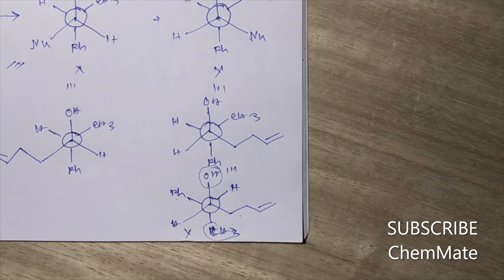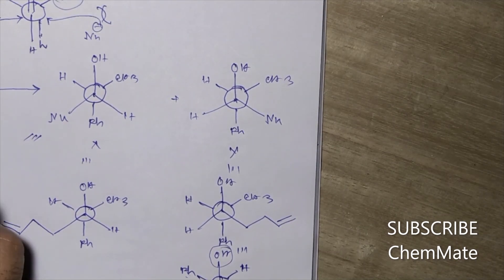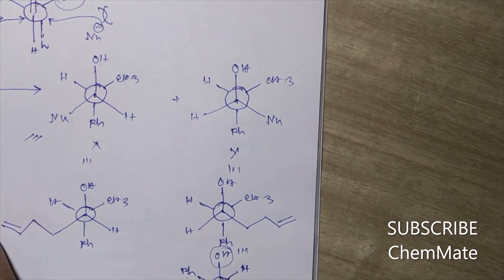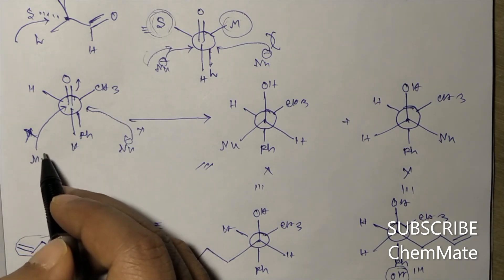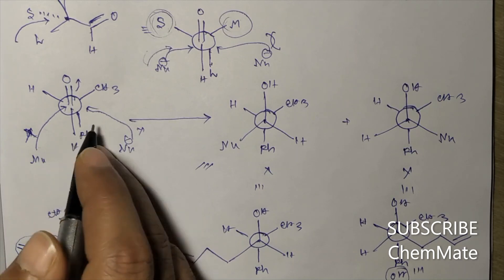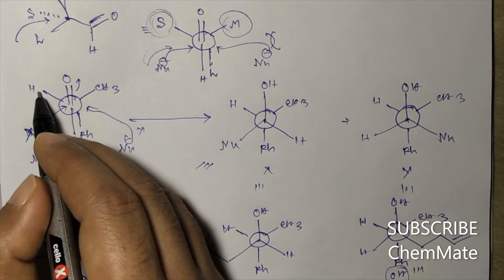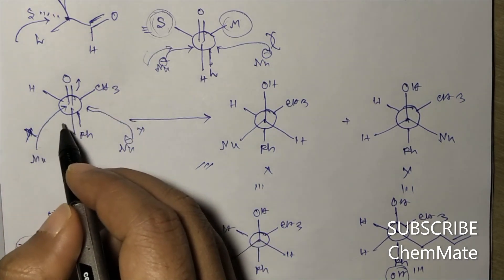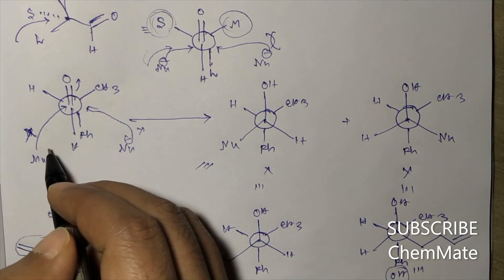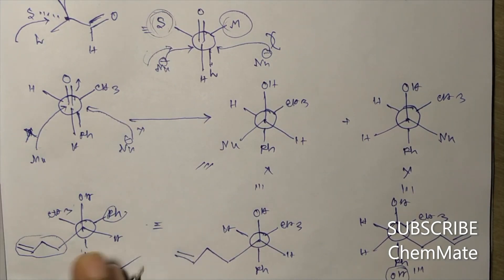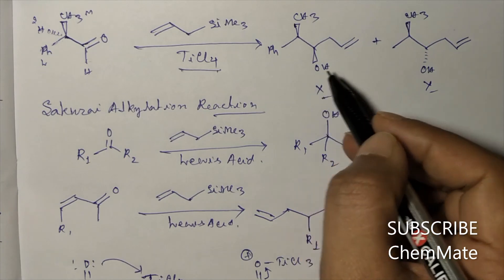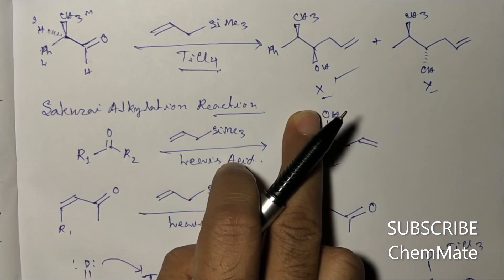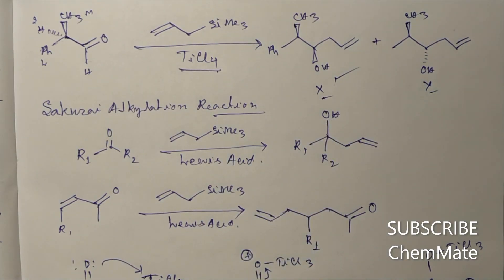The nucleophile may attack from both sides of the carbonyl carbon, but attack from the hydrogen side is preferentially the major attack because hydrogen is smaller than CH₃, so steric crowding is less. Therefore, product X will be the major product and will be formed predominantly. If you have any doubts regarding this video, please let me know in the comment box, and subscribe to my channel for such interesting videos. Thank you, have a good day, bye bye!